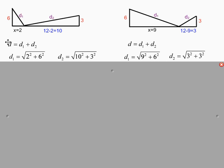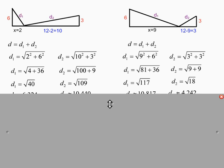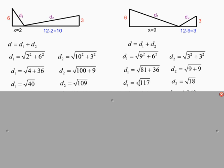In the first case to find D1, I recognize this as a right triangle and use the Pythagorean theorem. Two squared plus six squared equals D1 squared, and I take the square root of both sides. Here I use the Pythagorean theorem: 10 squared plus three squared equals D2 squared. I could do the exact same formulation: nine squared plus six squared equals D1 squared, and three squared plus three squared equals D2 squared. So in the first option I get square root of 40 plus square root of 109. In the second option I get square root of 117 plus square root of 18.